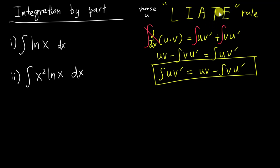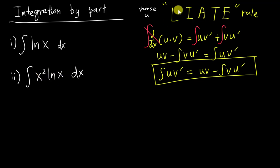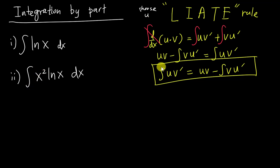In LIATE: I is inverse trigonometry (like arcsin, arccos), A stands for algebra, T stands for trigonometry, and E stands for exponent. So x² is considered algebra (A), and ln(x) is logarithm (L). Since L has higher priority than A, we always choose the L to be our u.